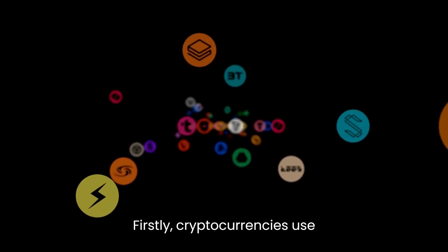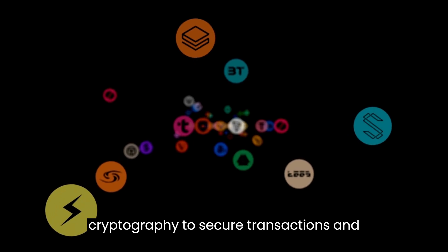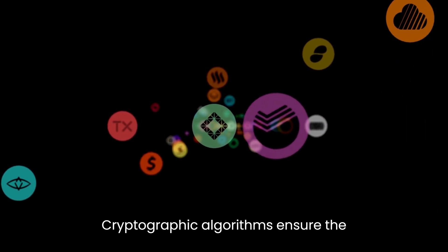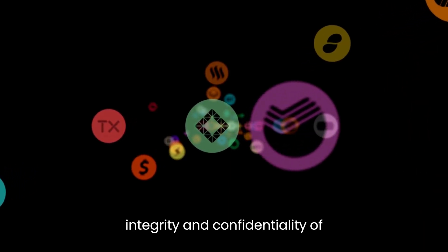Firstly, cryptocurrencies use cryptography to secure transactions and control the creation of new units. Cryptographic algorithms ensure the integrity and confidentiality of transactions, making them resistant to fraud and counterfeiting.